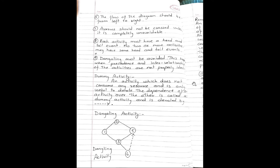Next concept: Dummy activity. An activity which does not consume any resource and is only useful to denote the dependence of an activity over the other is called as dummy activity. It is denoted by dotted arrow. This is the network diagram: 1 to 2, 2 to 5, 1 to 3, 3 to 4, and 3 to 5. So 3 to 4, if you keep it like this only, this becomes dangling activity. So 4 to 5, we have to draw a dummy arrow, dummy activity, so that this will not be a dangling activity.